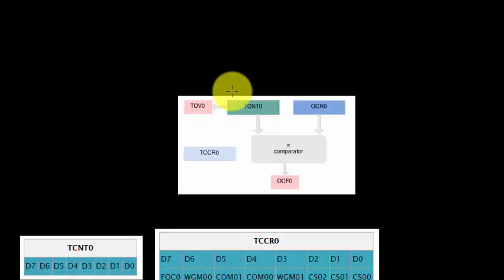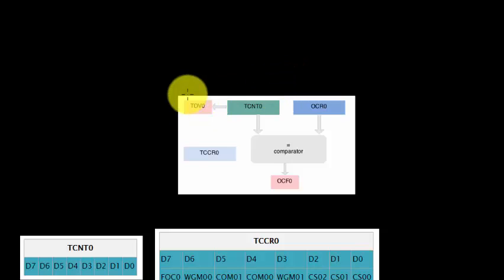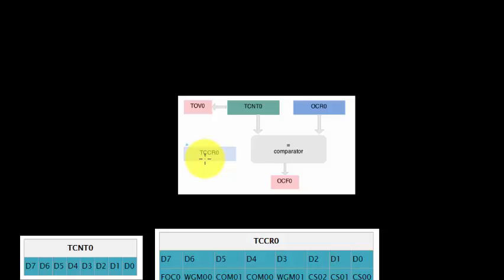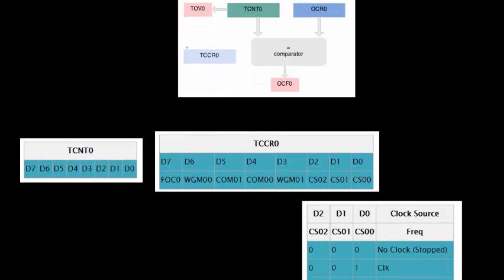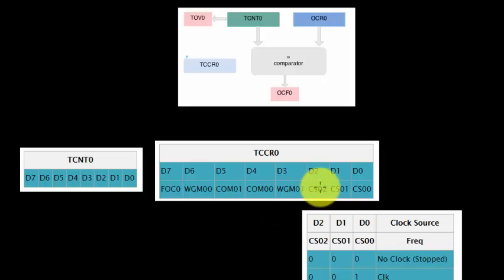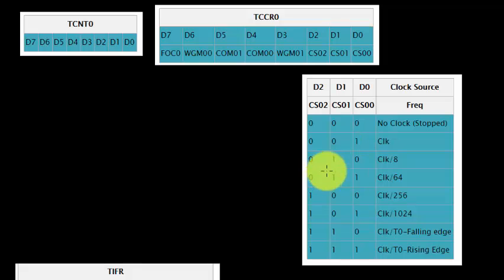TCNT0 runs from 0 to 255, and when it rolls over from 255 to 0 the TOV (Timer Overflow) flag sets. We'll also be using the TCCR register, which is used to set how we want to use the timer. These three bits define the clock source, as discussed previously.